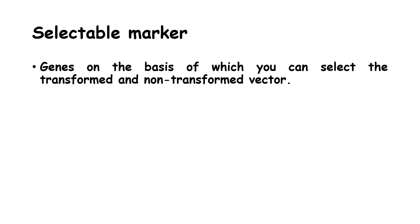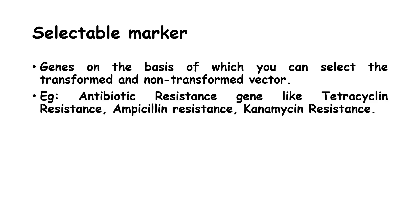Next, let's talk about selectable markers. Selectable markers are the genes on the basis of which you can select the transformed and non-transformed vectors. Examples include presence of antibiotic resistance genes like tetracycline resistance, ampicillin resistance, or kanamycin resistance.